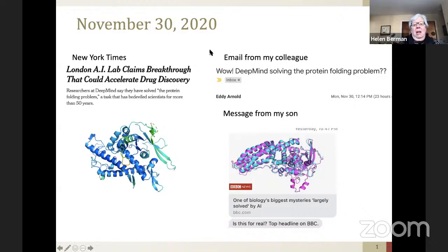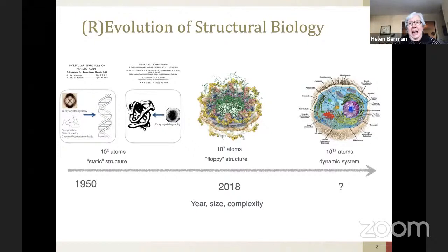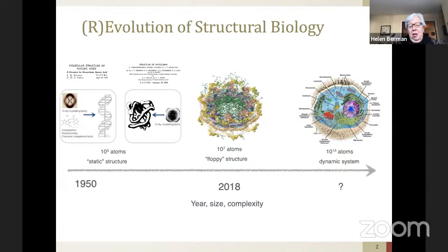Structural biology actually began around 1935, but we began to see results in the 50s with the structure of DNA — the famous model by Watson, Crick, and Franklin — and the structure of myoglobin, a small protein. Both of these discoveries won Nobel Prizes. But as time has gone on, we are beginning to look at structures of very complex machines in the cell, and actually starting to look at the cell itself. Structural biology has gone from modest, and at the time quite ambitious, beginnings to where we are now.